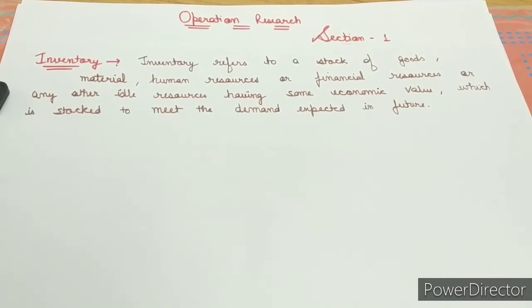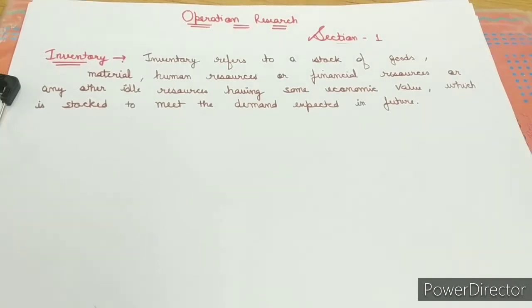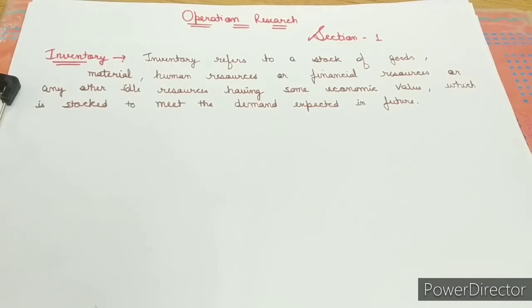Inventory is the stock of all those things which have some economic value and which we store inside the organization to fulfill our future demands. Every business organization has to maintain some inventory to fulfill its future demands. How much inventory they maintain depends on their scale — if the organization is running on large scale, it will need to maintain more stock, and if it is running on small scale, less inventory will suffice.